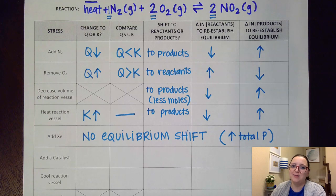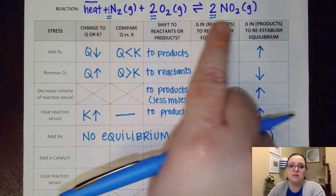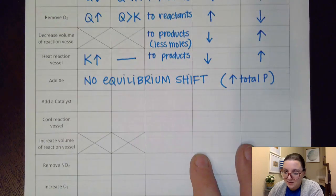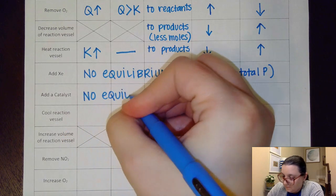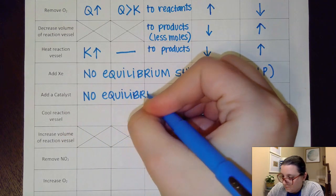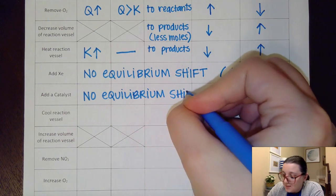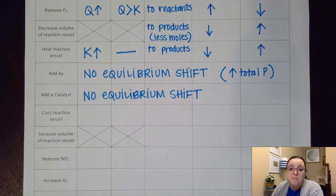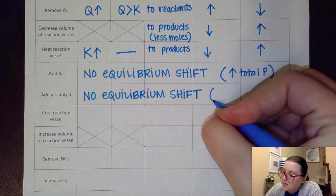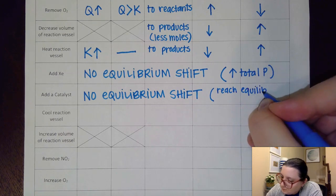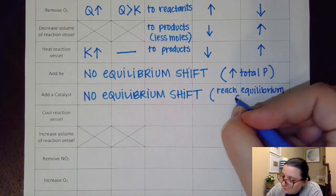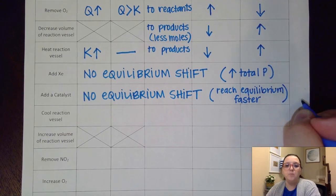Now one more down here, adding a catalyst. Hopefully we recognize that one too. Remember, a catalyst will speed up our reaction, but it doesn't change amounts of any of these things. So on adding a catalyst, what we're going to do is we're also going to put no equilibrium shift. Again, the reason why is because it doesn't change any of the amounts that we have. The only thing that it would do is it would help us to reach equilibrium faster.